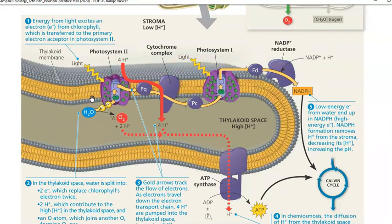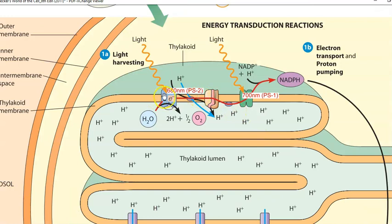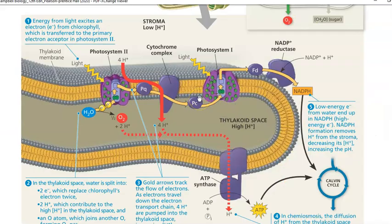The two photosystems function at different wavelengths - photosystem 2 functions at 680 nanometers and photosystem 1 at a higher wavelength of 700 nanometers. Apart from these two photosystems, other molecules include plastoquinone, plastocyanin, ferredoxin, and NADP reductase. NADP reductase is the final enzyme in this electron transport chain, where NADP is reduced to NADPH. That is, low-energy electrons from water end up in NADPH, resulting in the formation of an energy-rich NADPH molecule.